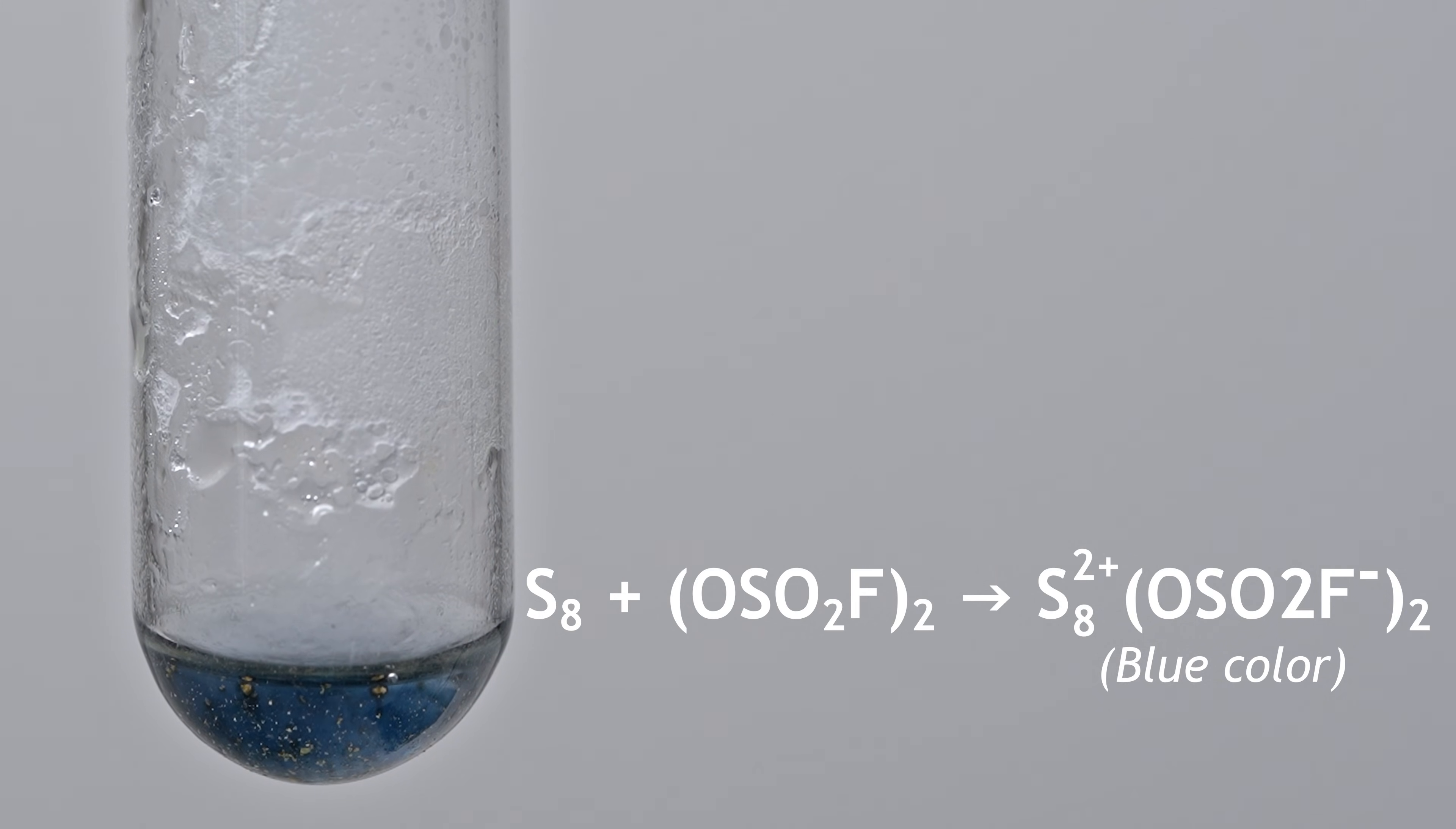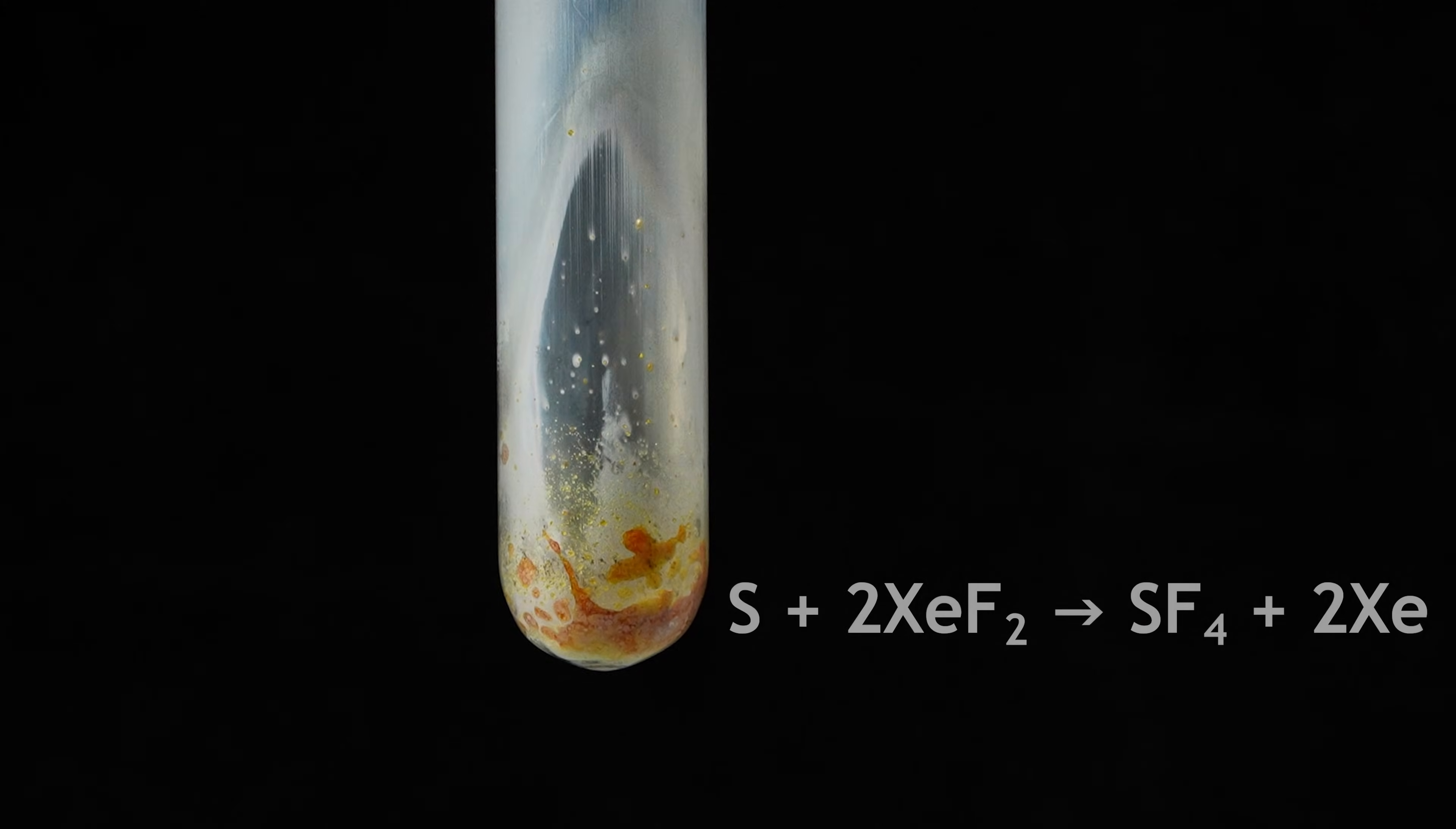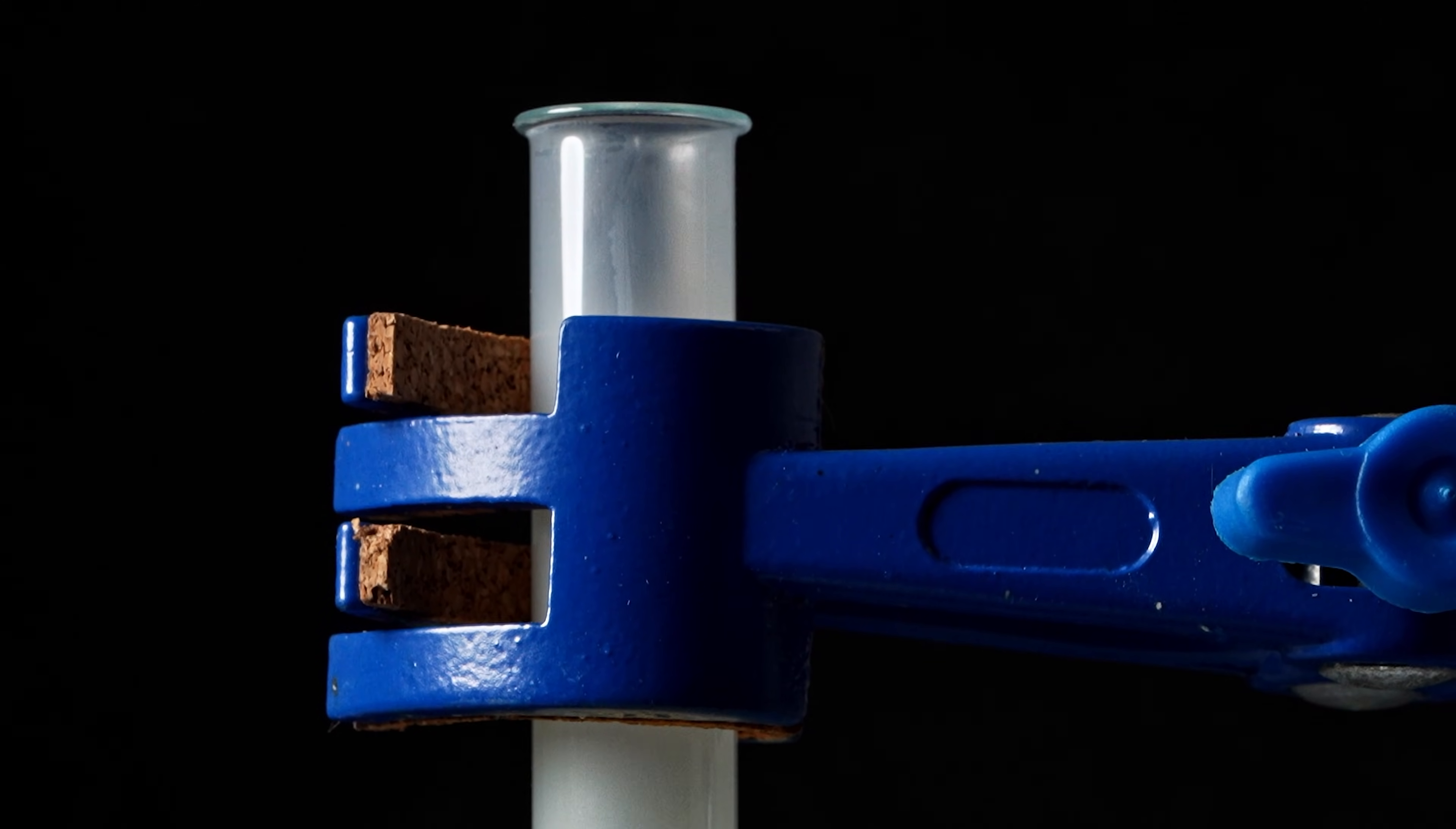And by the way, if xenon difluoride is added to ordinary sulfur, nothing happens, even with stirring. The reaction occurs only when the mixture is heated. It seems that this reaction produces not the higher hexafluoride, but sulfur tetrafluoride, because white fumes of hydrogen fluoride are clearly visible, which form when sulfur tetrafluoride comes into contact with moisture in the air. After the experiment, the test tube has a characteristic frosted appearance.